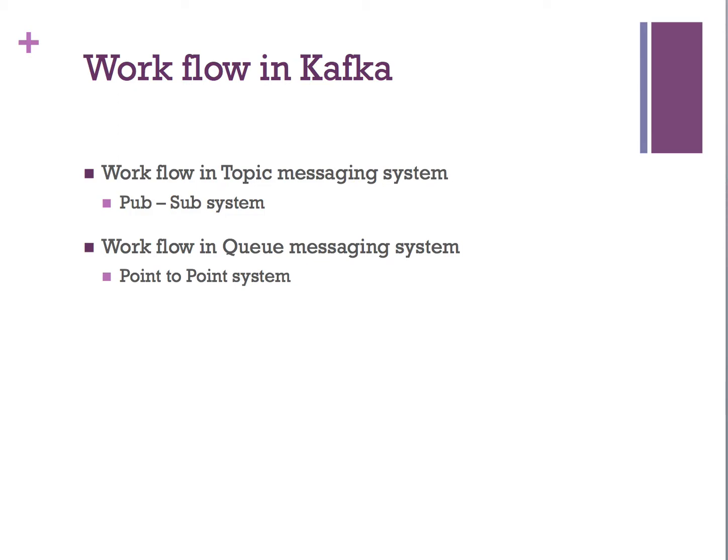There are two kinds of workflow in Kafka: topic messaging system and queue messaging system. We will see how each will work. First, we will see the workflow of the topic, which is also called publish-subscribe messaging. In this scenario, producers send messages to a topic at regular intervals.